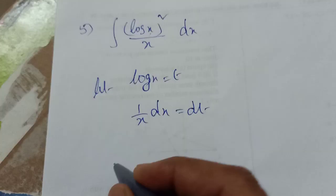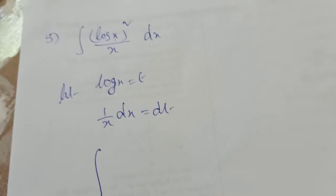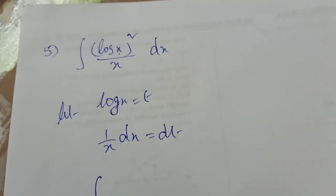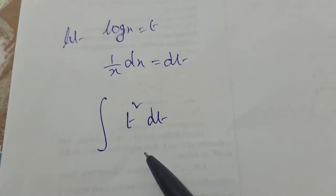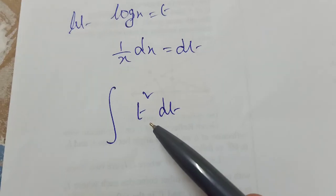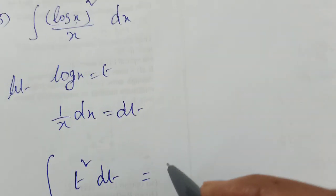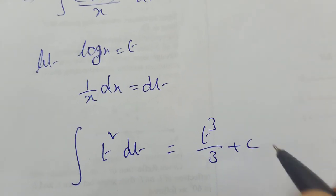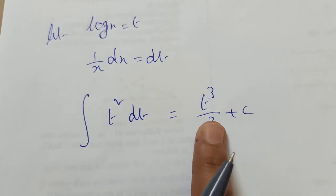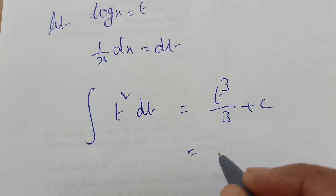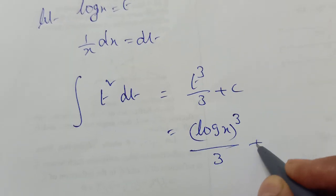Applying the substitution: 1/x dx = dt and log x = t, so the integral becomes the integral of t² dt. Using the power formula, that is t³/3 + C, which is (2+1)/(2+1). Substituting back t = log x, the final answer is (log x)³/3 + C.